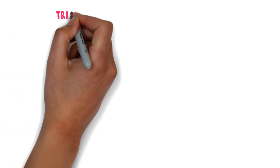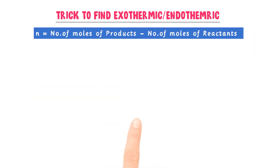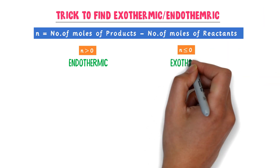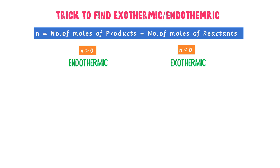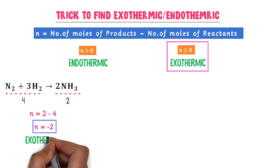Finally, let me teach you the trick to find endothermic and exothermic reactions easily. The trick is: n = (number of moles of product) minus (number of moles of reactants). If n is greater than 0, it will be an endothermic reaction. If n is smaller than or equal to 0, it will be an exothermic reaction. For example, consider the first reaction: the number of moles of product is 2, while the number of moles of reactants is 1 + 3 = 4. So n = 2 − 4 = −2. Since n is less than 0, this is an exothermic reaction.